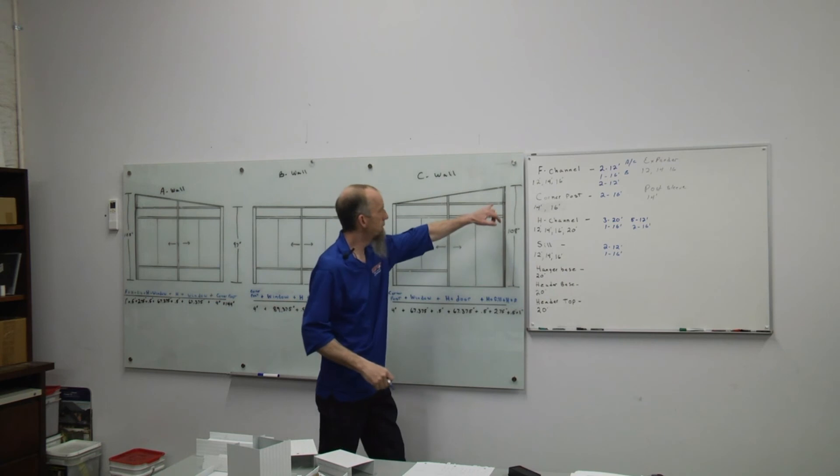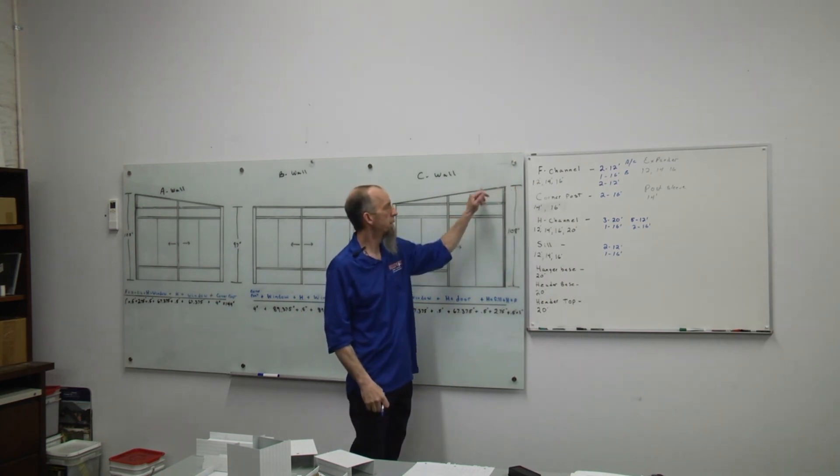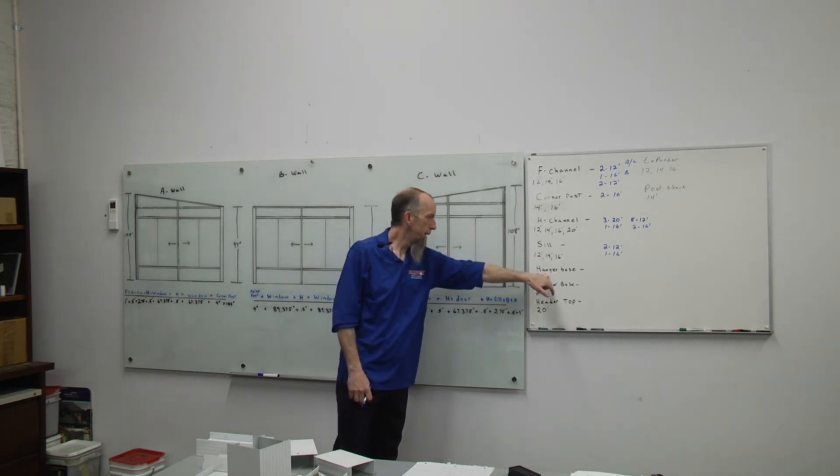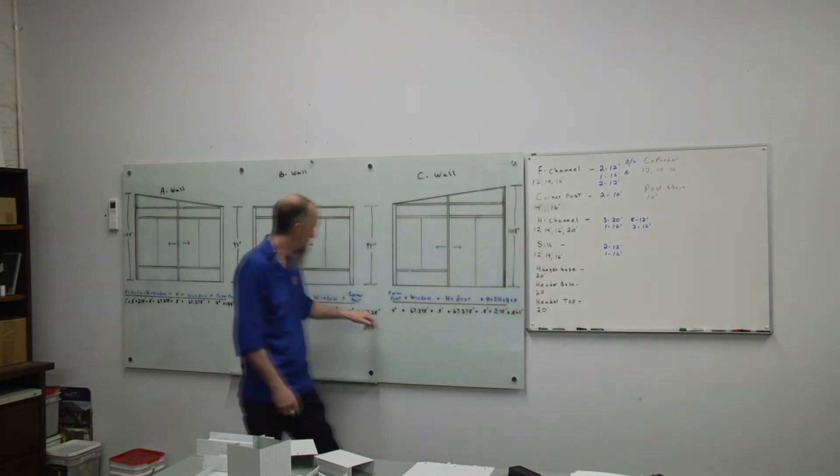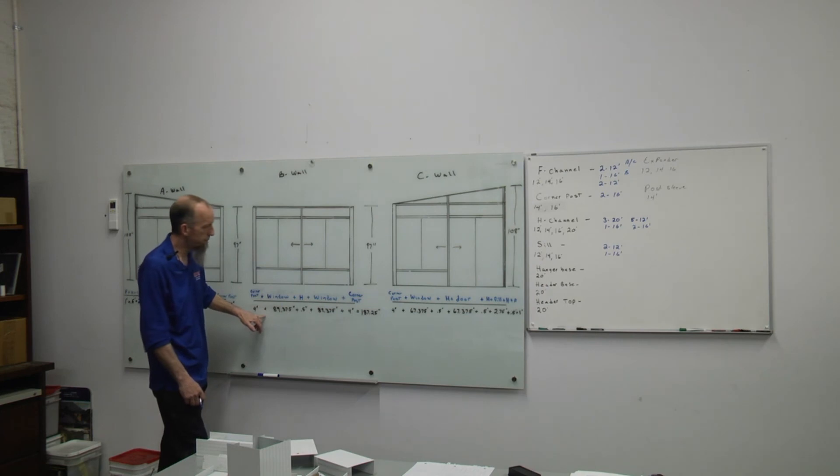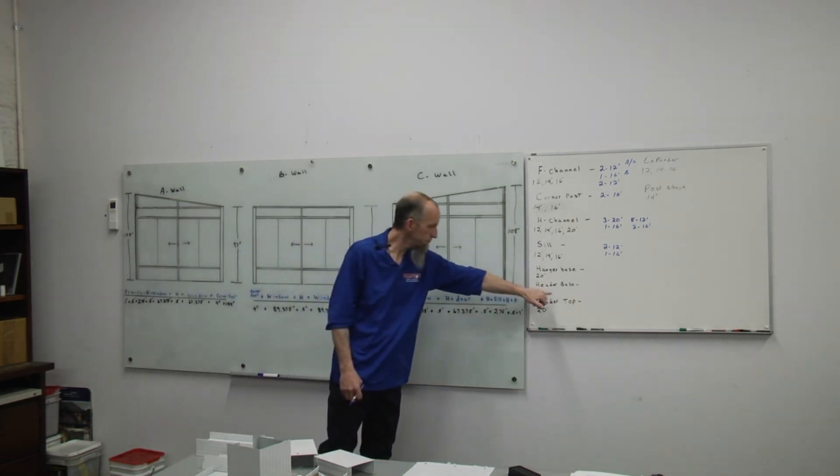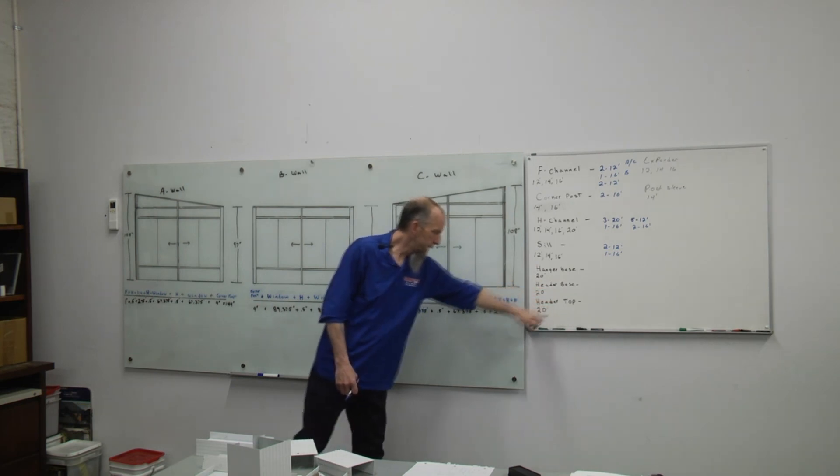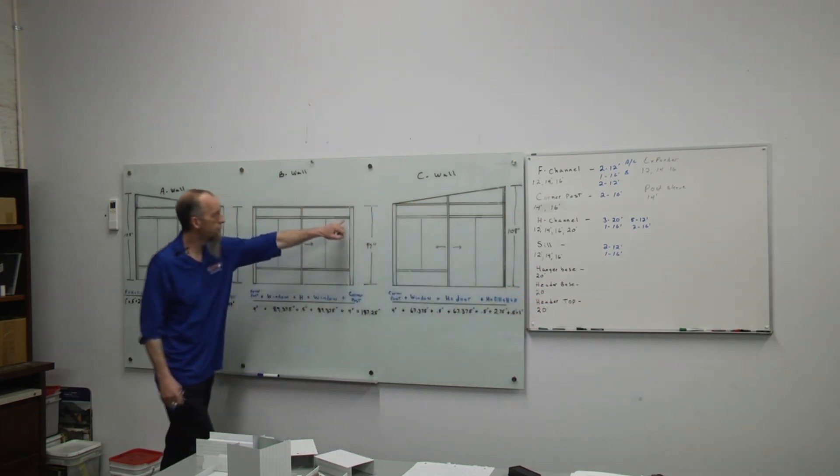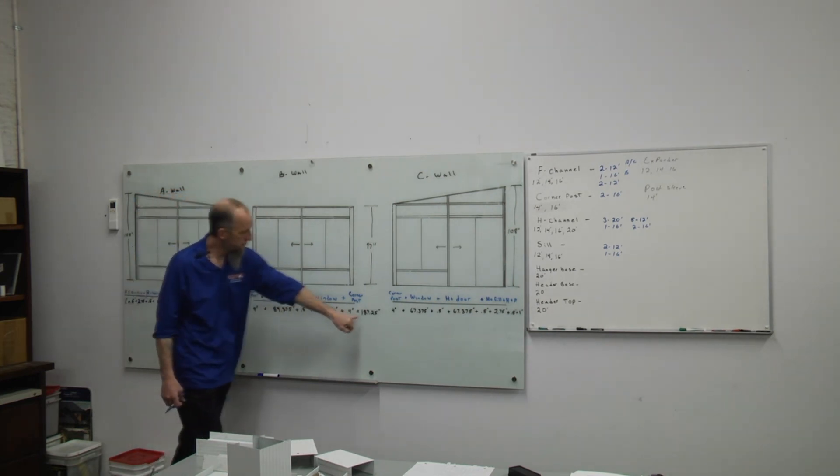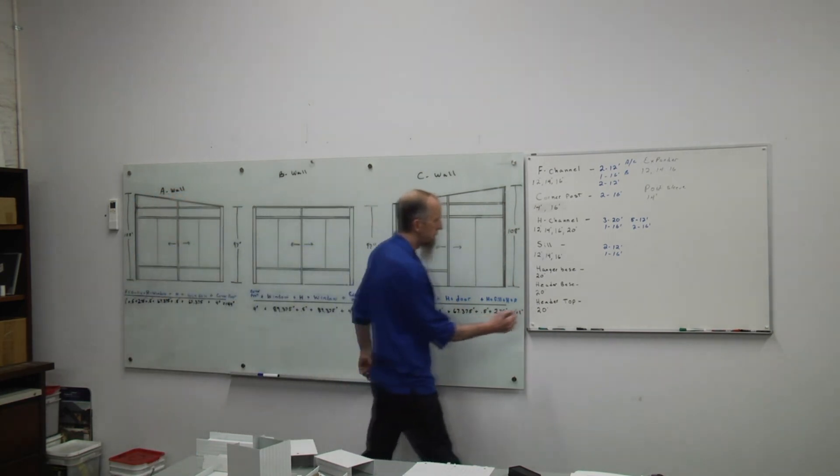Our hanger base we're going to have mounted at the house that the roof panels will slide into. Hanger base comes in 20 foot. That'll be plenty enough to give us our B wall plus our overhang. Same with header base and header top. They come 20 feet. That'll go from corner to corner in the B wall. So one piece will be enough.